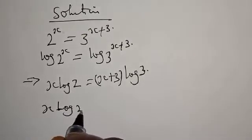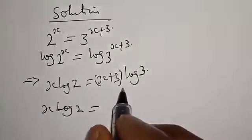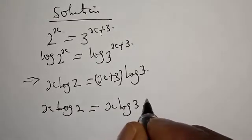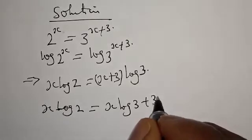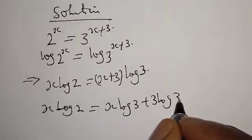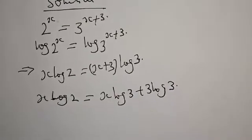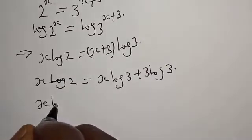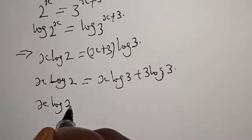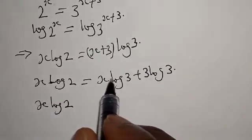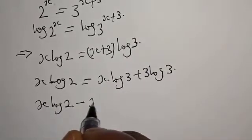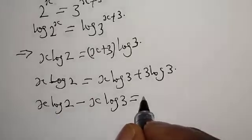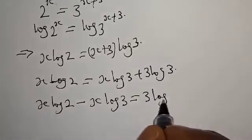x log 2 will be equal to — let's open this bracket — x log 3 plus 3 log 3. Then x log 3 crosses to the other side to give x log 2 minus x log 3 is equal to 3 log 3.